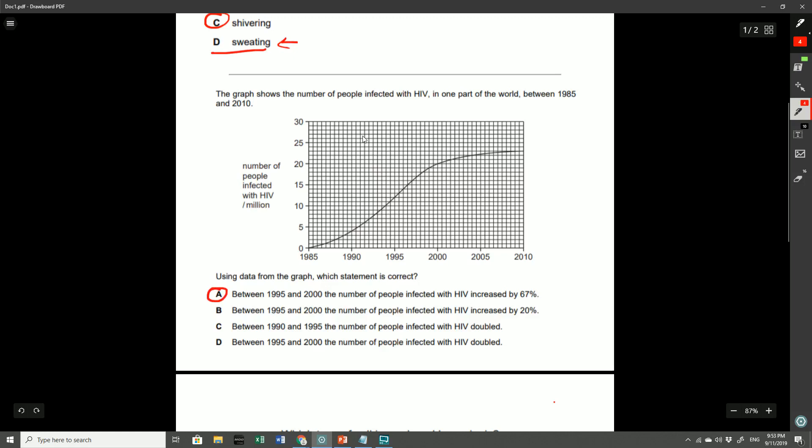This question was just testing your knowledge about how to calculate a percentage increase. From 1995, which is over here, the number of people that had HIV was 12 million. Whereas in 2000, if you take a look, the number of people infected was 20 million. So it went from 12 to 20, so that's an 8 million increase. Now 8 million divided by the original 12 million times by 100 is going to give you a 67% increase. So that's why the answer was A.